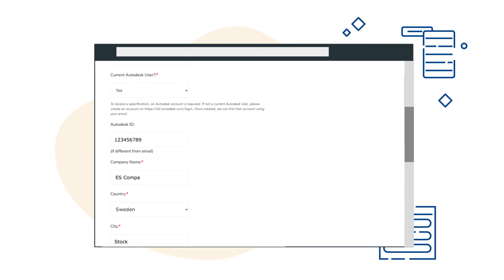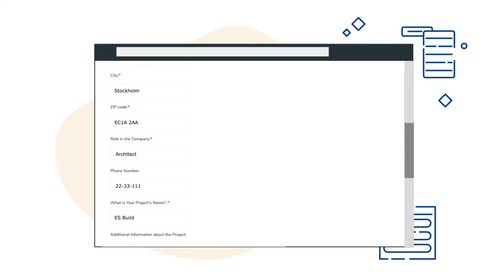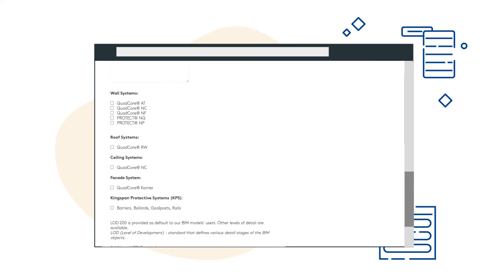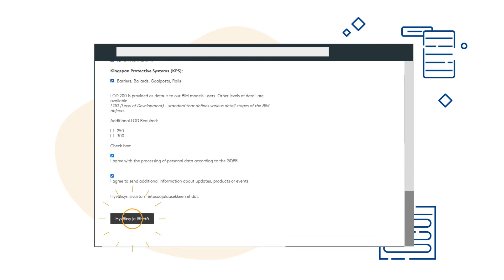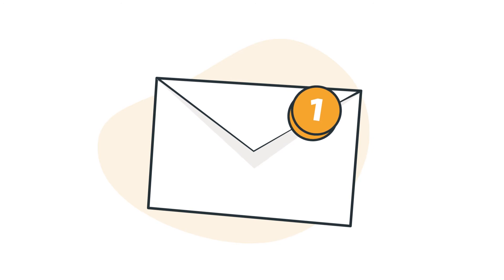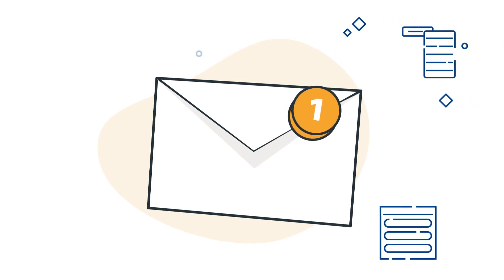Upon receipt of your inquiry, we will make our 3D models available through Autodesk BIM 360, which you can access through autodesk.com. You'll also receive an email from Autodesk inviting you to access Kingspan's BIM content in Autodesk BIM 360.